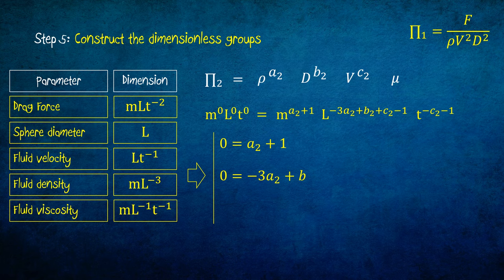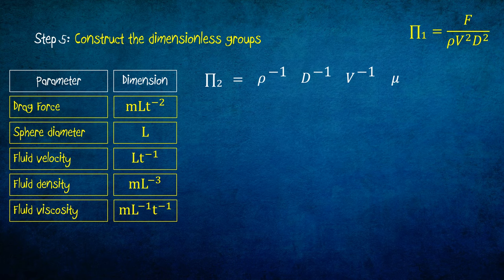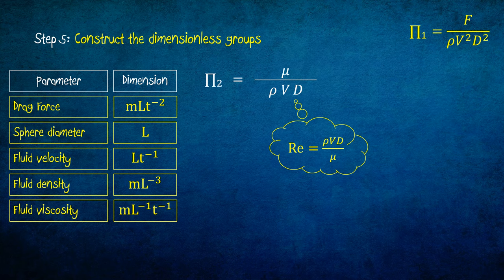We obtain a2 equals negative 1, c2 equals negative 1, and b2 equals negative 1. Hence, the expression of pi 2 is mu over rho vd. We know that rho vd over mu is Reynolds number. Hence pi 2 equals 1 over Reynolds number, or Reynolds number power negative 1.